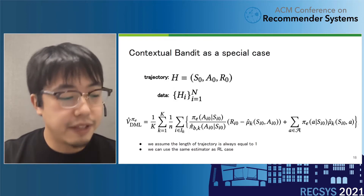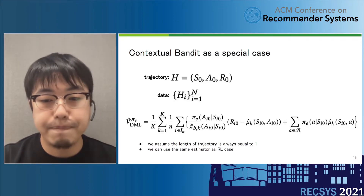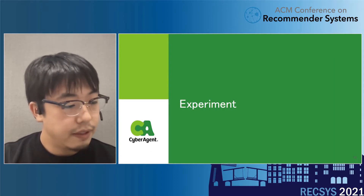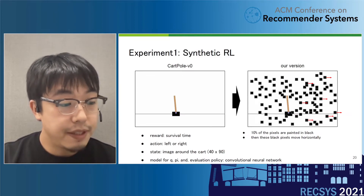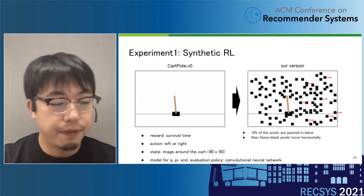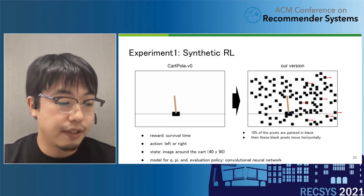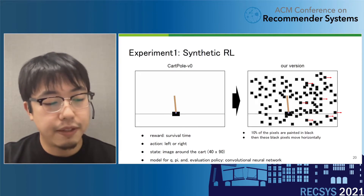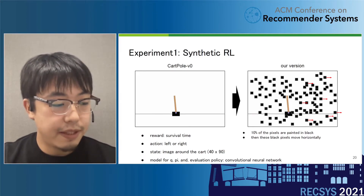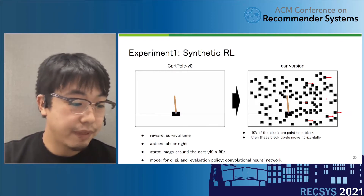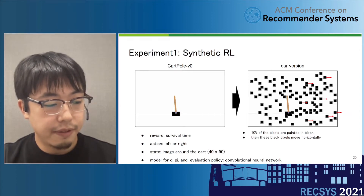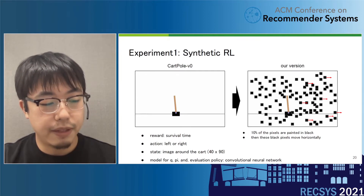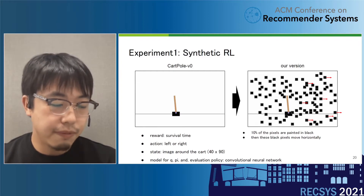Contextual bandit setting is included as a special case where the length of each trajectory is always one. The first experiment is a synthetic reinforcement learning case in a CartPole environment. The reward is survival time, and the action is moving left or right. For the state, we use an image around the cart. We also paint about 10% of randomly chosen pixels in black, and at each time step those pixels move horizontally. This modification creates spurious correlations between the reward and those noisy pixels. We use a convolutional neural network to estimate Q and rho, and also for the policy.